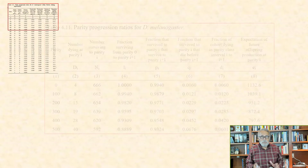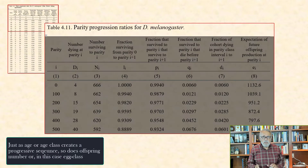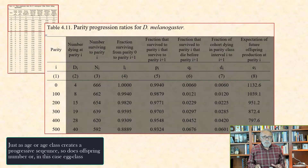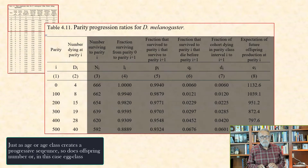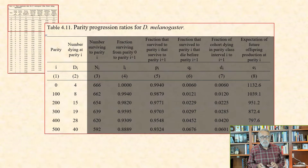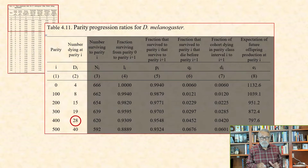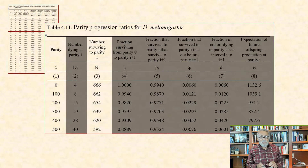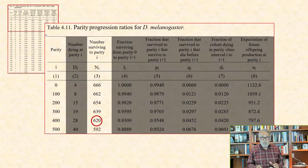In the first column, we have parity for the table from 0 to 500, where 400 means egg class 400. The second column includes the number dying in parity i — at parity 400, there were 28 flies that died between laying 400 and 500 eggs. Column 3 contains the number surviving to parity i, starting with 666 flies, and there were 620 flies that survived to parity class 400.